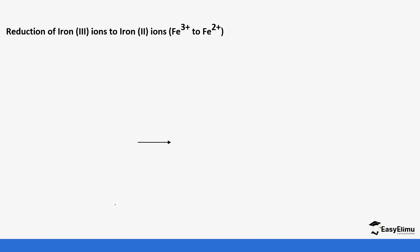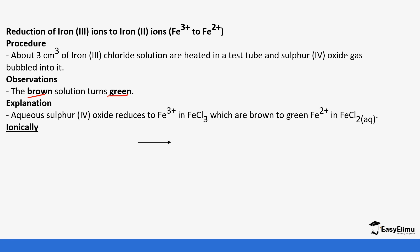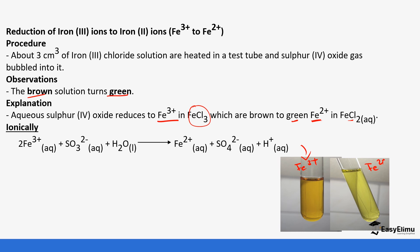There is also the reduction of iron(III) ions to iron(II) ions. When you look at iron(III) ions and bubble sulfur dioxide into the solution, it changes from brown, which is iron(III), to green, which is iron(II). Sulfur dioxide reduces the iron(III) ions in iron(III) chloride to form green iron(II) chloride. As seen in the diagram, we start with brown iron(III) ions and end up with green iron(II) ions. The sulfite ions lose electrons which are gained by the iron(III) ions to form sulfate ions, and the iron(III) ions are reduced to iron(II) ions.